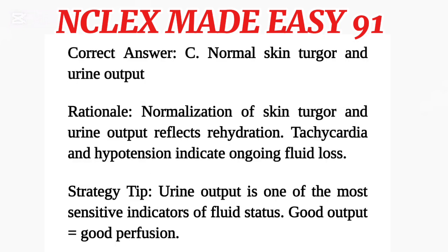Correct answer: C. Normal skin turgor and urine output. Rationale: Normalization of skin turgor and urine output reflects rehydration. Tachycardia and hypotension indicate ongoing fluid loss. Strategy tip: Urine output is one of the most sensitive indicators of fluid status. Good output equals good perfusion.